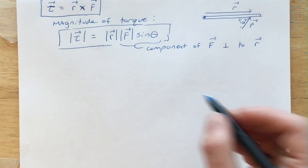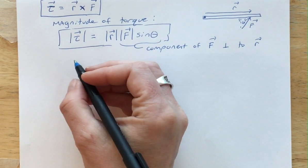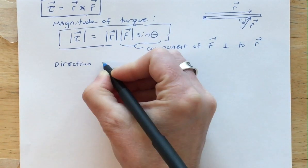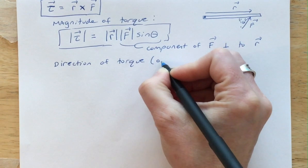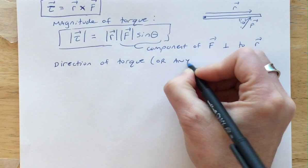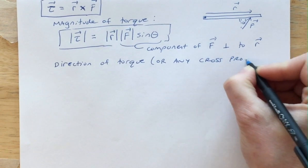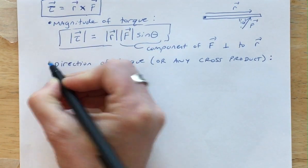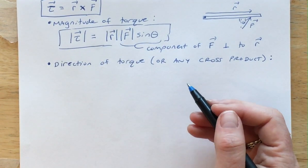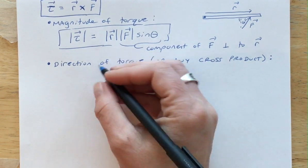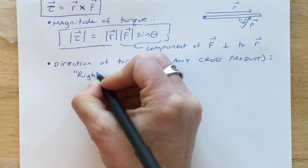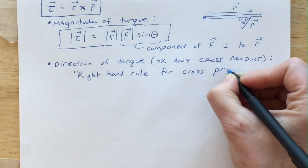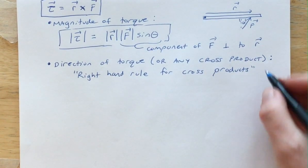In general, that formula gives us the magnitude, but we also need to find the direction of the torque — or the direction of any cross product, since cross products appear throughout this course. To get the direction of a cross product, we use the right-hand rule for cross products.